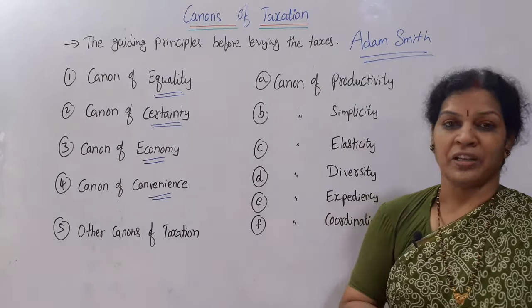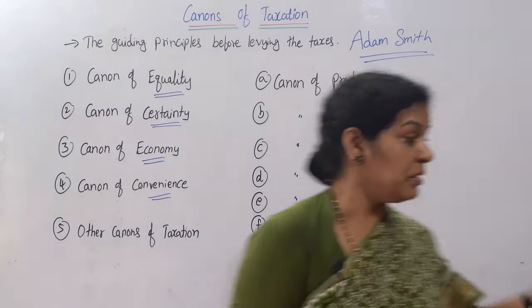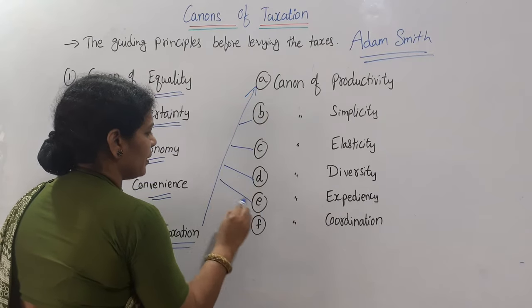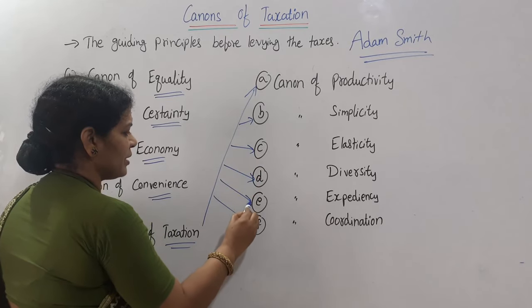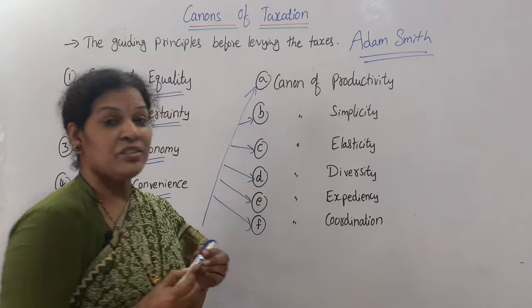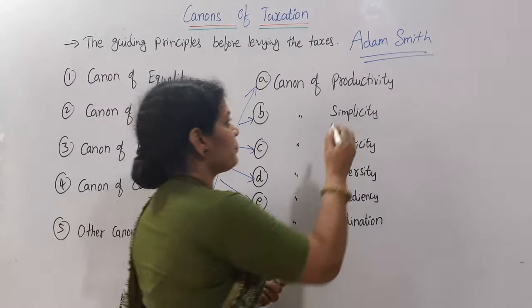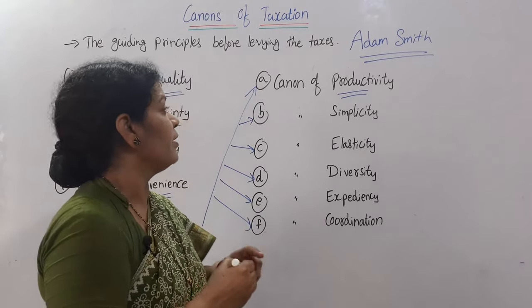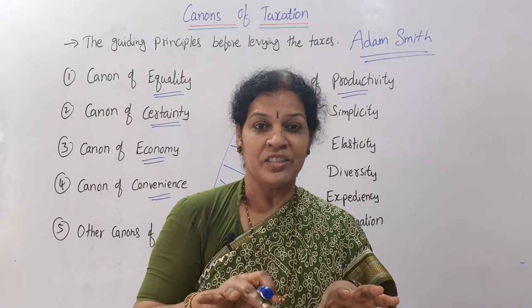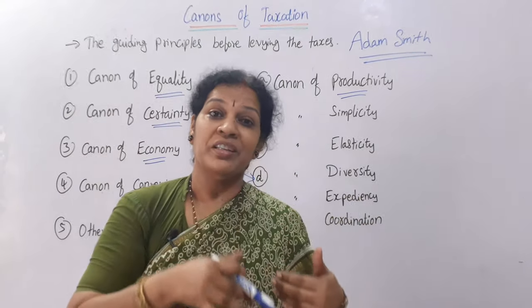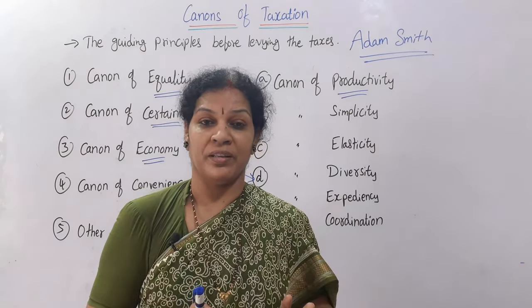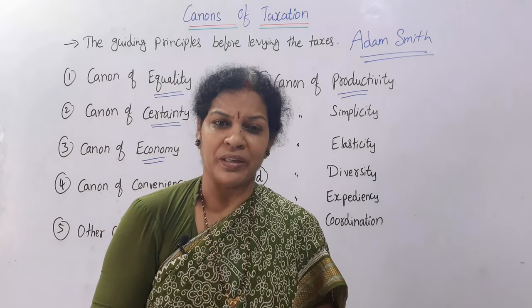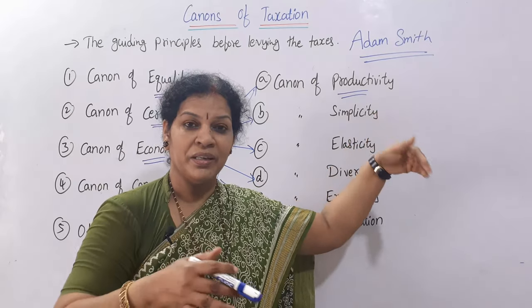Apart from these, there are other canons of taxation. These include several additional principles. The first of these is the canon of productivity. Whenever a country charges tax, whatever tax amount is collected should be utilized properly for a specific productive purpose. It should be used meaningfully, not just collected without purpose.